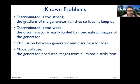Everything so far sounds good, but there are also known problems. GANs will not work well in several cases. First: what if the discriminator is too strong? If the discriminator always detects 'that's a fake,' the gradient of the generator vanishes — it becomes very small.